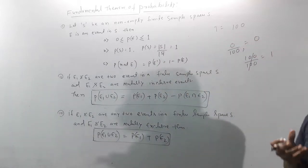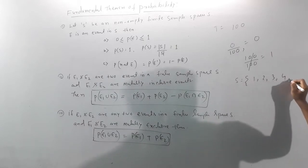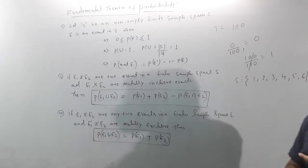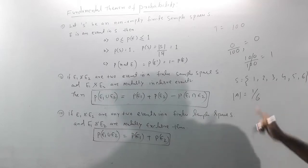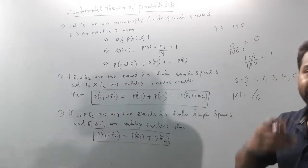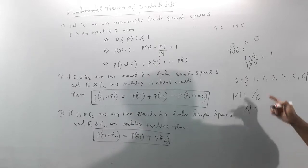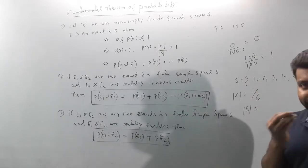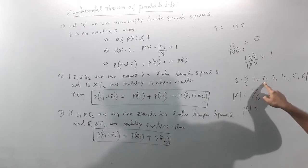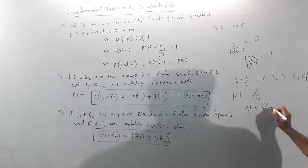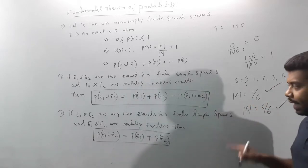If you roll a die, the sample space S is 1, 2, 3, 4, 5, 6. So there are 6 outcomes. A is the event of getting 6, so P of A is 1 by 6. That is the NOT condition — what is done the other way? Instead I should add: 6 is one, so 5 by 6 is the not condition.